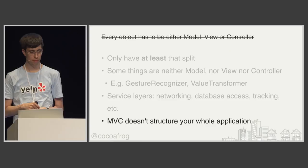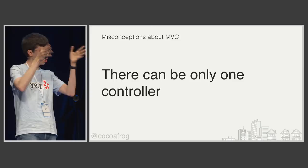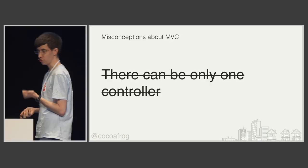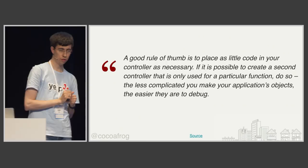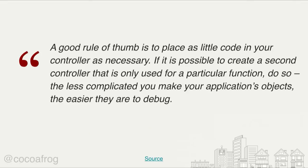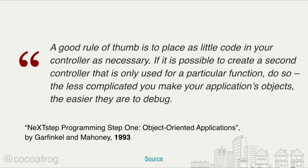The second common misconception is that there can only be one view controller for each MVC stack. That's not true. There's a nice quote: 'A good rule of thumb is to place as little code in your controller as necessary. If it is possible to create a second controller that is only used for a particular function, do so. The less complicated you make your application subjects, the easier they are to debug.' This quote is from NeXTSTEP Programming from 1993 — 25 years ago, people were already explaining that you can have multiple view controllers and it makes sense to break things down.